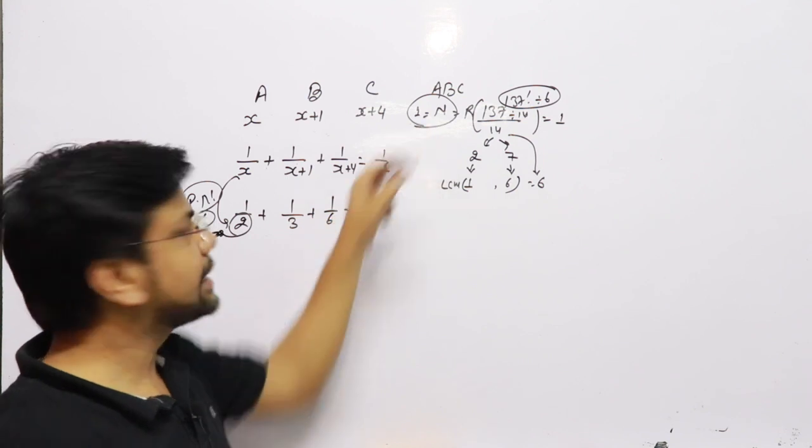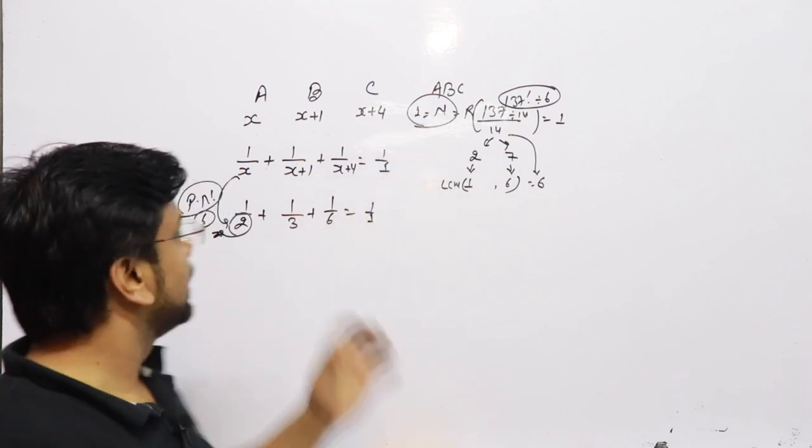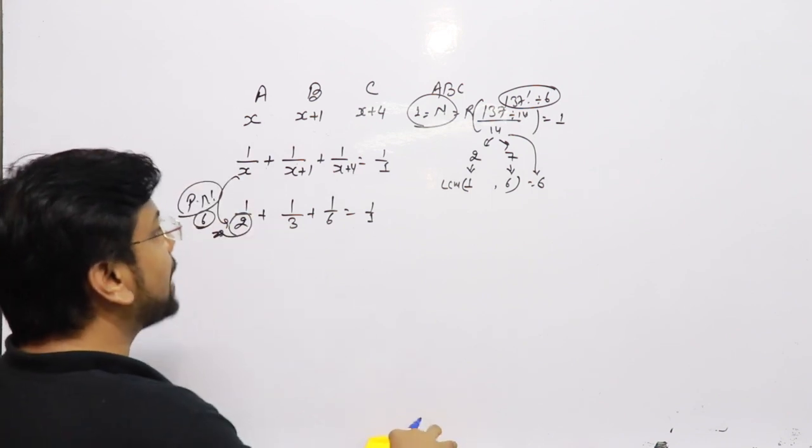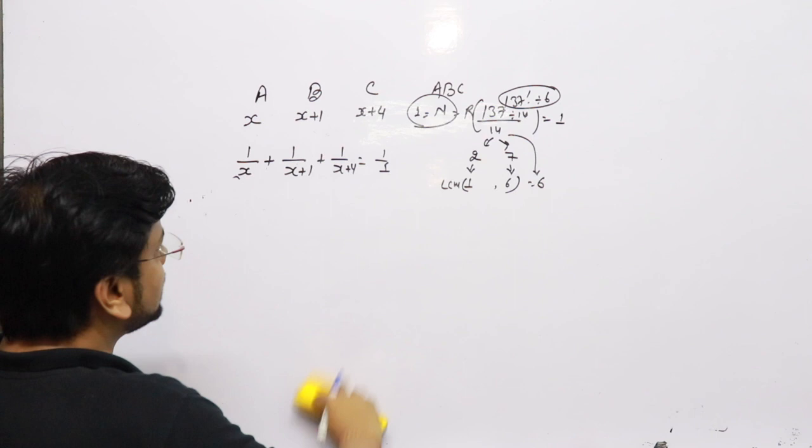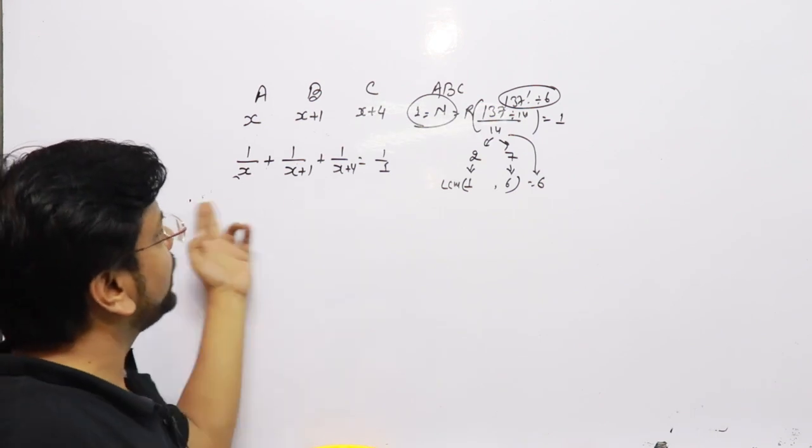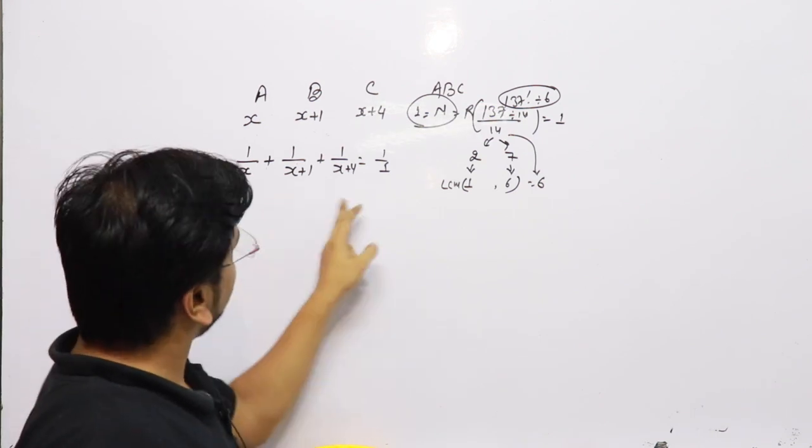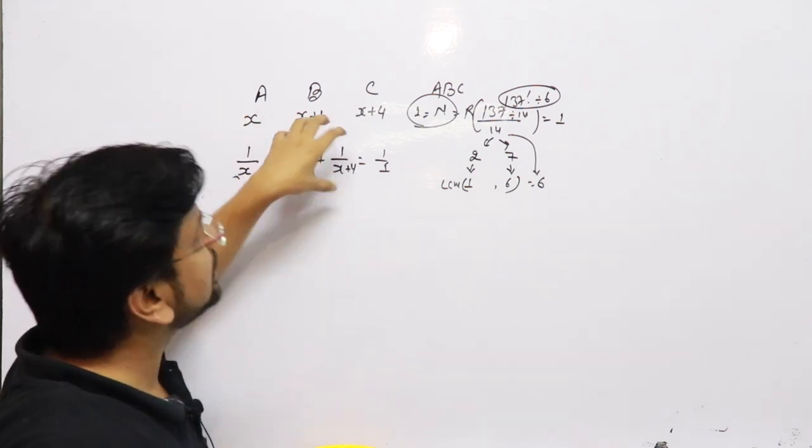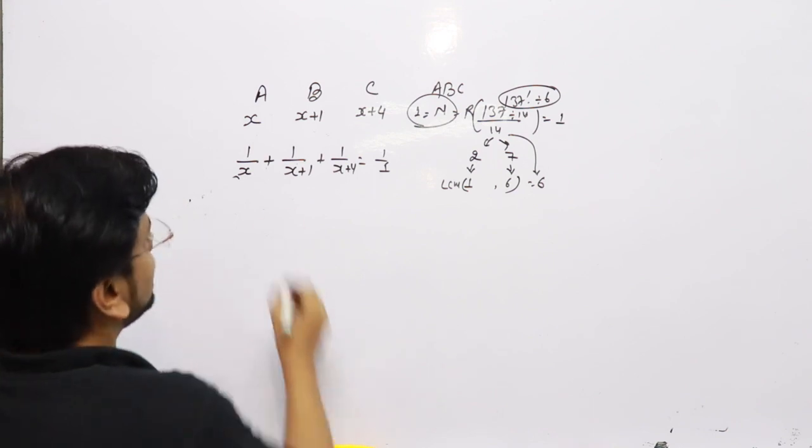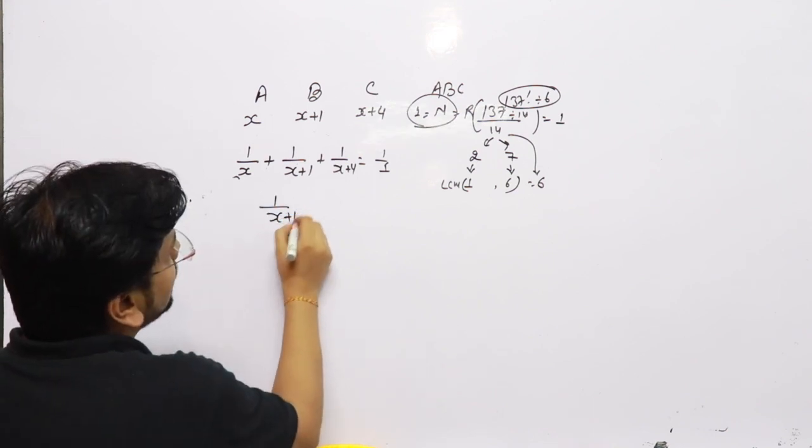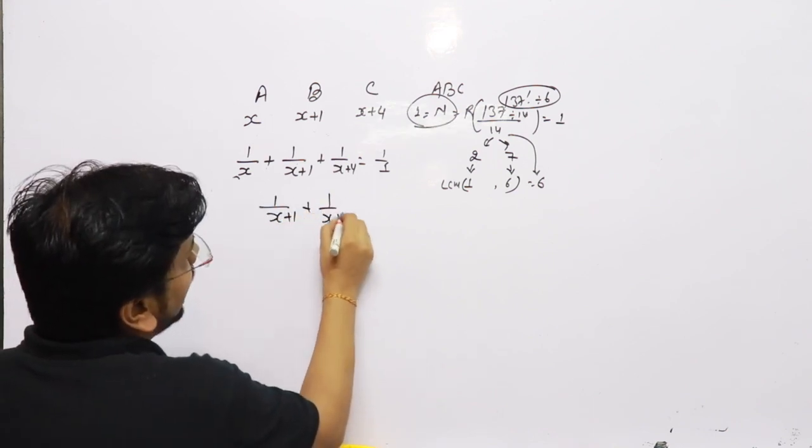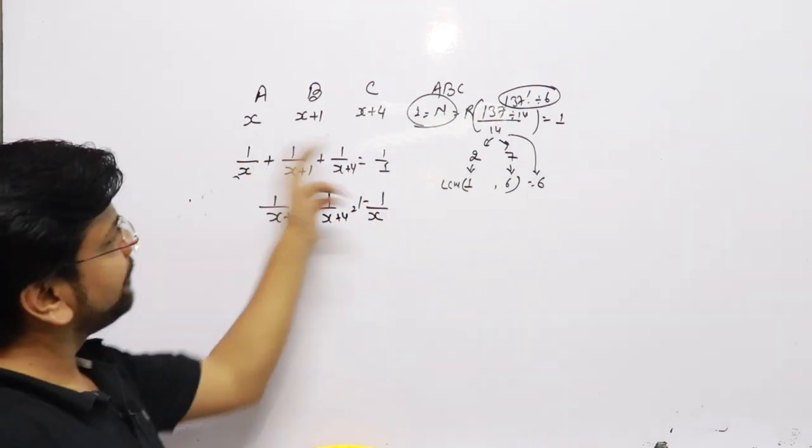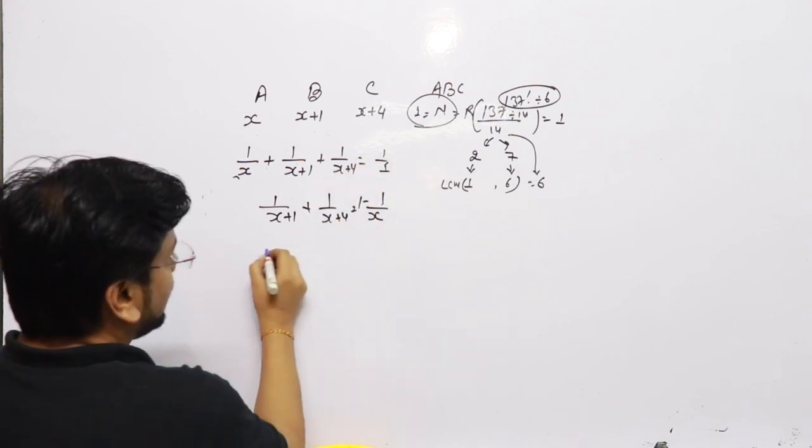But what happens if we do not have any integral solution or what happens if we need to solve this equation? The concept of three variable time and work questions is: just work on two variables on one side and one variable on the other side. 1 - 1/x. I have taken 1/x in the RHS. Take the LCM.